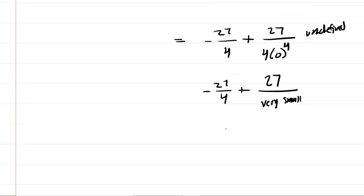27 divided by a very small number would actually be infinity. Whenever you divide by a tiny number, your result gets really big. So you end up with negative 27 fourths plus infinity in essence, which is infinity. This is a divergent integral. So the answer here is indeed just divergent.